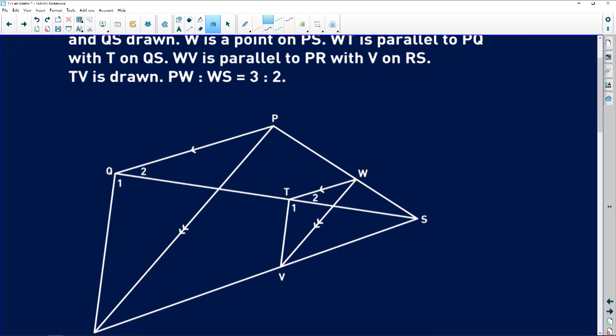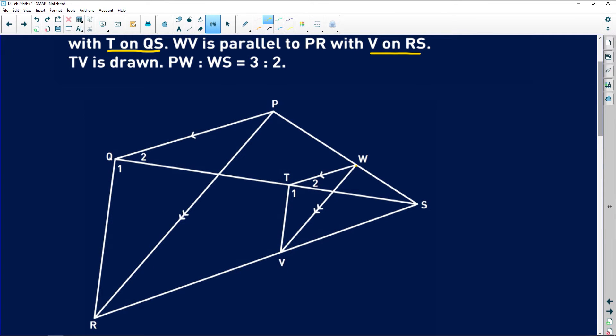Secondly it says WV is parallel to PR with V on RS. So when they say with V on RS and T on QS it's just saying that we have lines that are parallel and there are points on the sides that make them parallel. TV is drawn. That is just a line. And then it says that the ratio of PW to WS is 3 to 2. Remember that ratio is simplified.